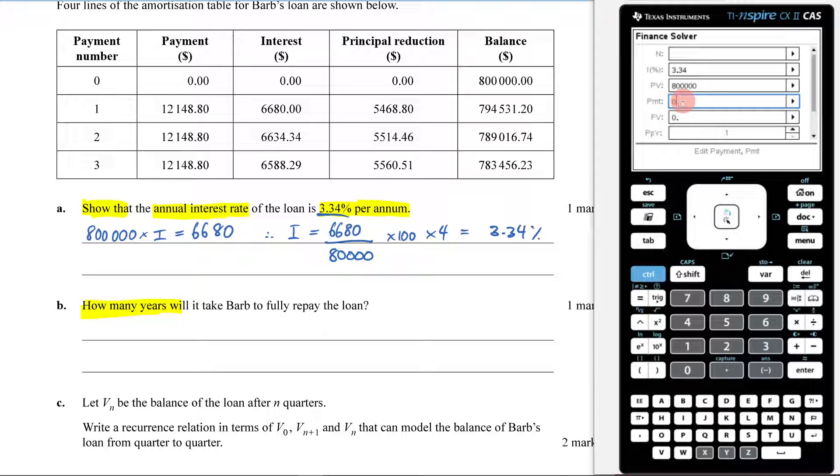Your PMT is the amount you're giving in payments. That's going to be negative because you're giving it to the bank: 1, 2, 1, 4, 8.80 because that's your payments. Your future value, we're trying to figure out where this hits zero. And we know that our PPY and CPY will both be four.